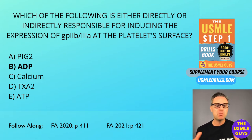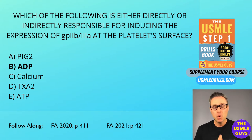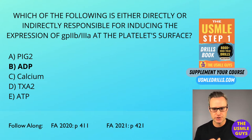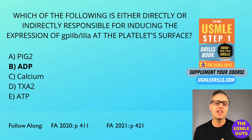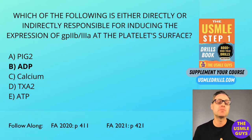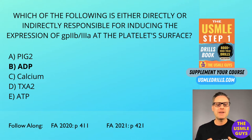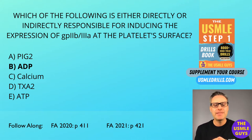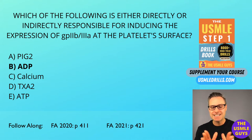Step one involves injury to the endothelium. When this occurs, we get a transient vasoconstriction that works through a neural stimulation reflex, as well as via something known as endothelin, which is released from damaged endothelial cells.